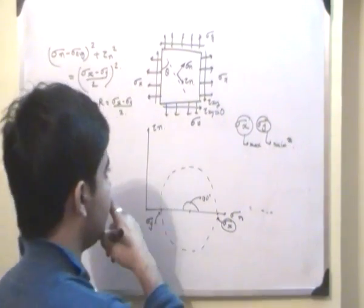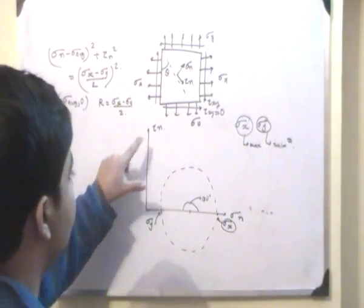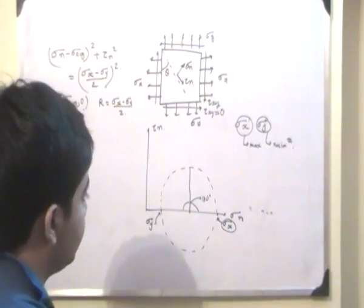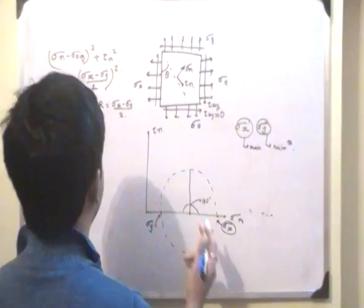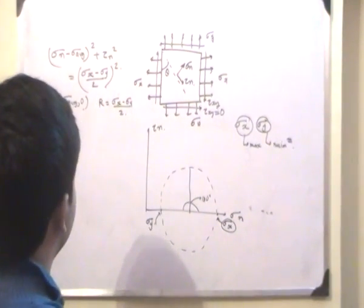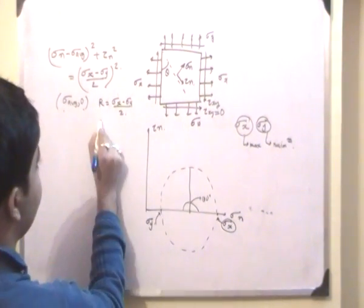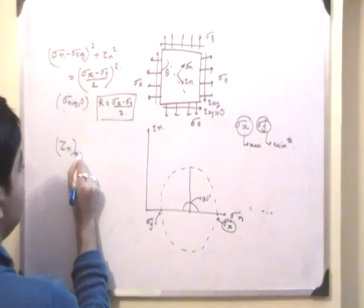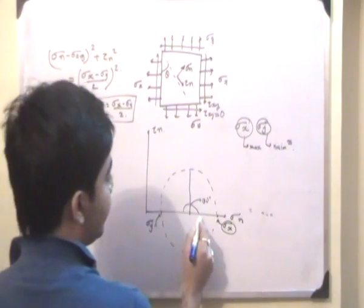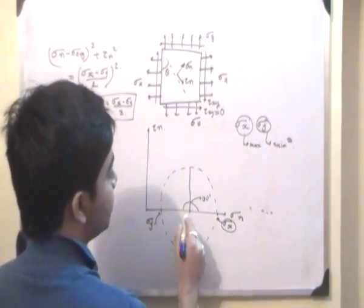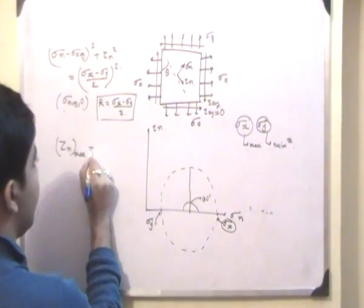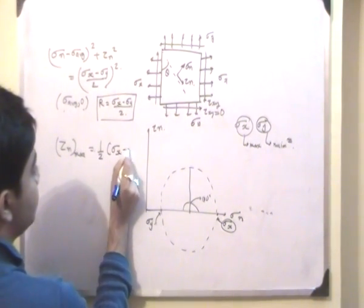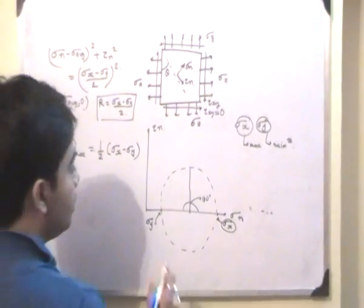Now, we are going to find the maximum value of tau_n, which is essentially the radius of the circle. And the radius is equal to sigma_x minus sigma_y by 2. So tau_n will have its maximum value at theta equal to 45 degrees with respect to the principal plane, and tau_n max will be equal to half the difference of the principal stresses.